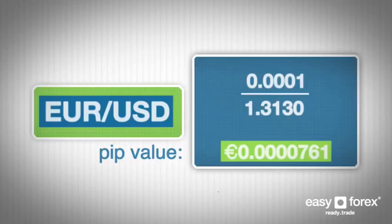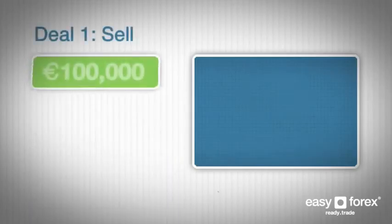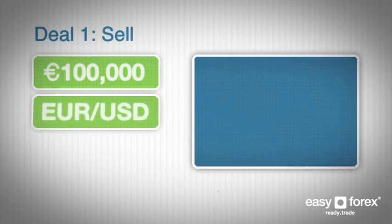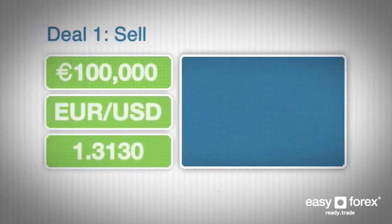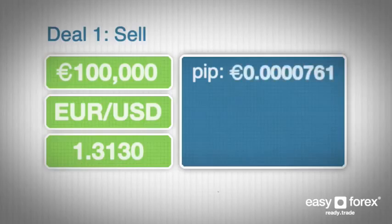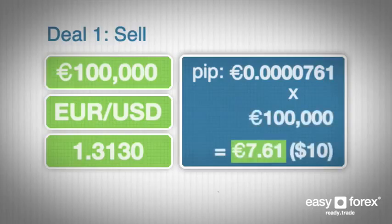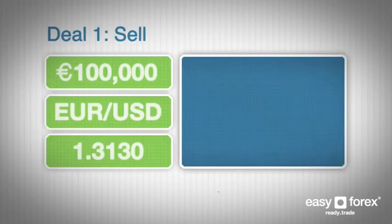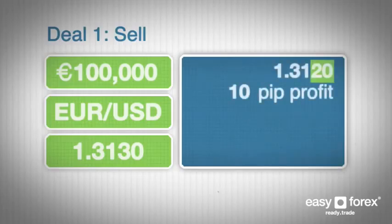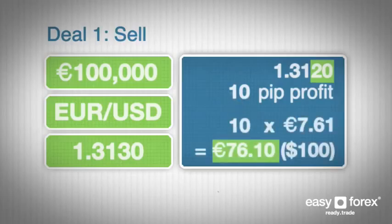Let's turn this into a Forex deal to see what the PIP would represent in either a profit or loss. Deal 1: Sell 100,000 euros worth of Euro-US dollars at 1.3130. PIP value in euro terms is 0.0000761 times 100,000, which equals 7.61 euros or exactly $10. If the deal is closed at 1.3120 with a 10 PIP profit, the total profit will be 76.10 euros or $100.